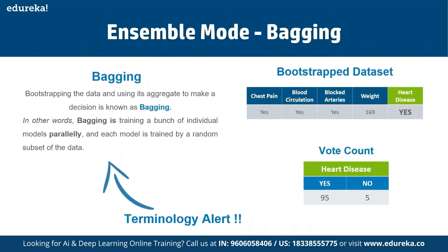Bootstrapping is an estimation method we use to make predictions on a dataset by resampling it. To create a bootstrap dataset, we randomly select samples from the original dataset. Note that we can select the same samples more than once. For example, a bootstrap dataset might contain: chest pain — yes, blood circulation — yes, blocked arteries — yes, weight 169 — yes. The yes count might be 95 and no count 5 in a bootstrapping model.